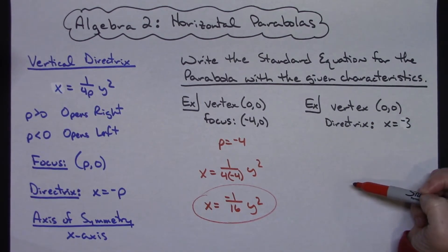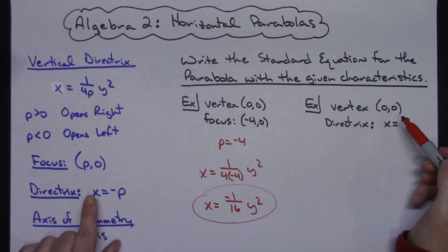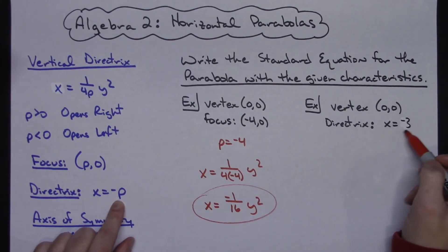Now on this one over here my second example I've got a vertex again at 0,0 and I have a directrix x equals negative 3. Now on this one we need to do a little bit more work here because it says x is equal to a negative p, so my negative 3 has got to be equal to a negative p.